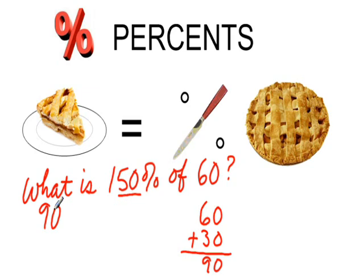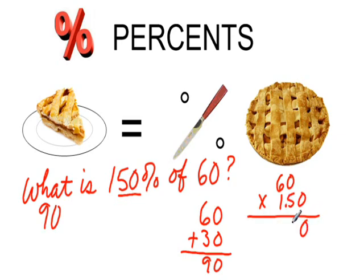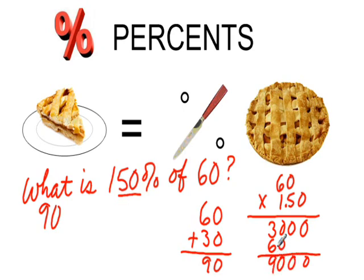Or, I could have done it this way: 60 times 1.50. The decimal point goes there — 0, 0 — and you get 90. So both ways I get the answer 90.